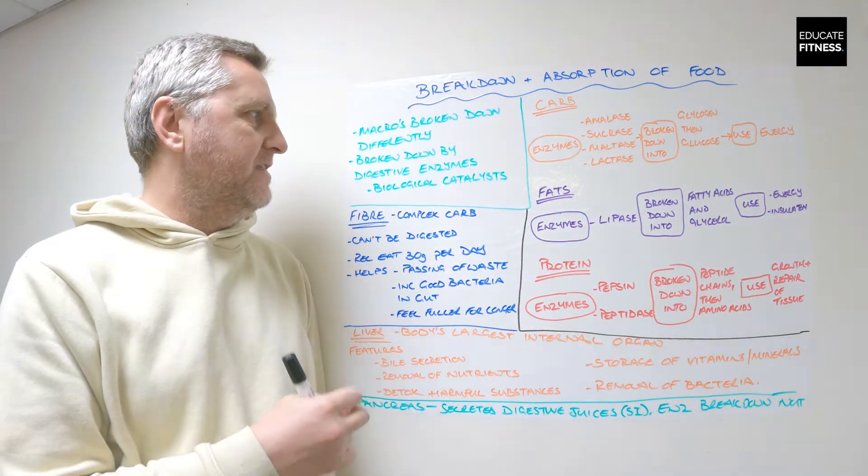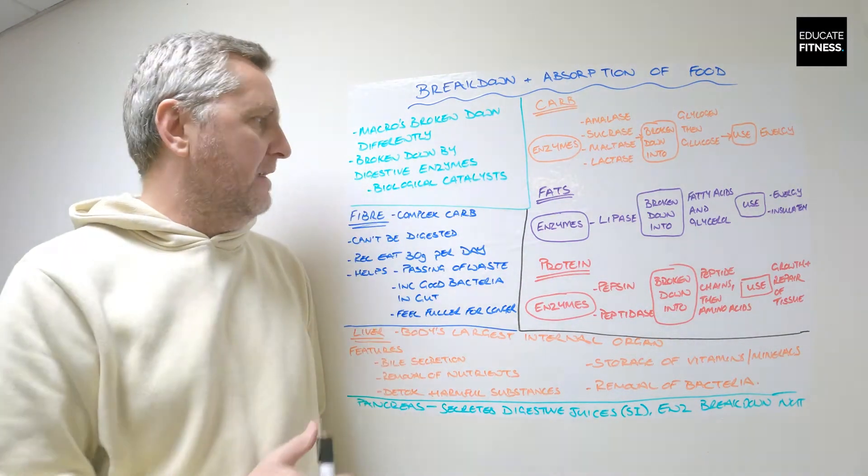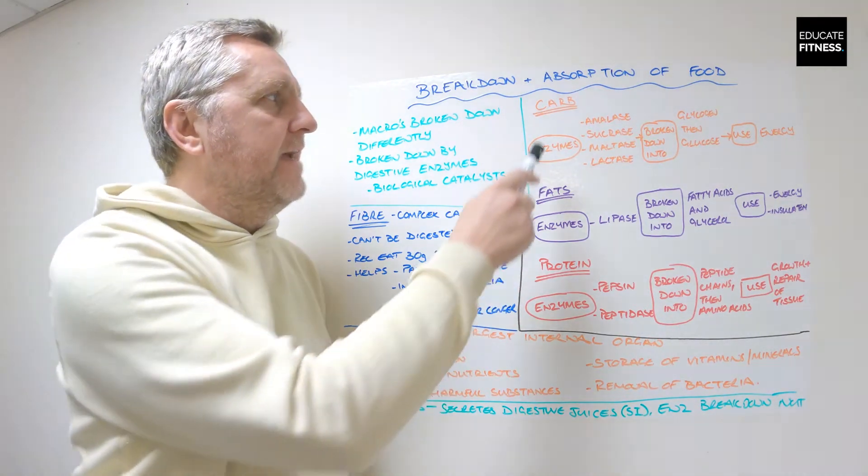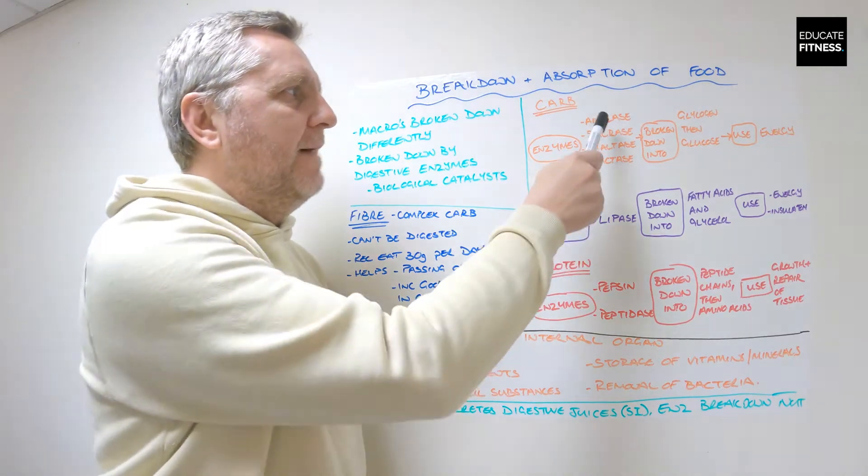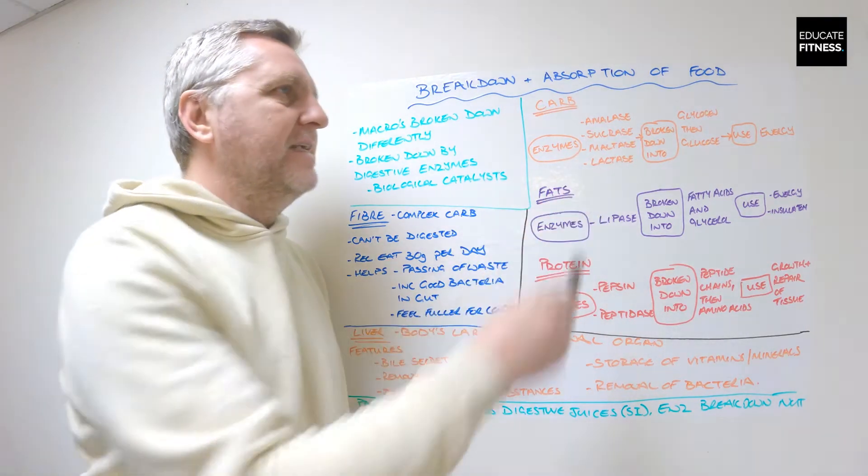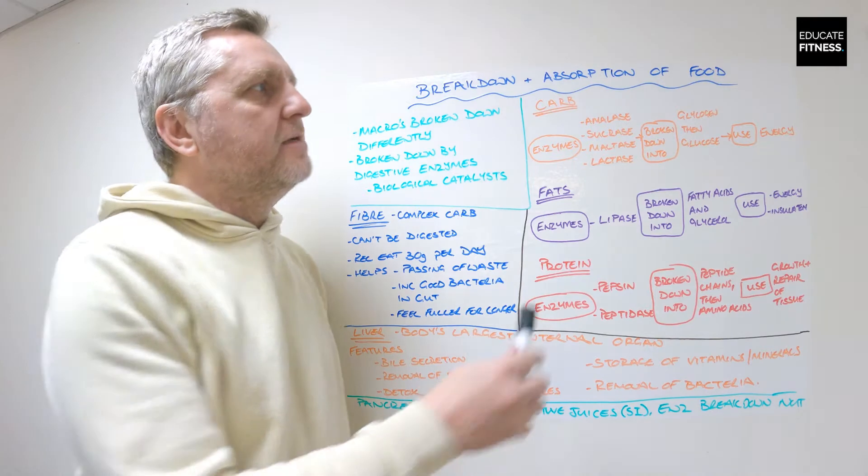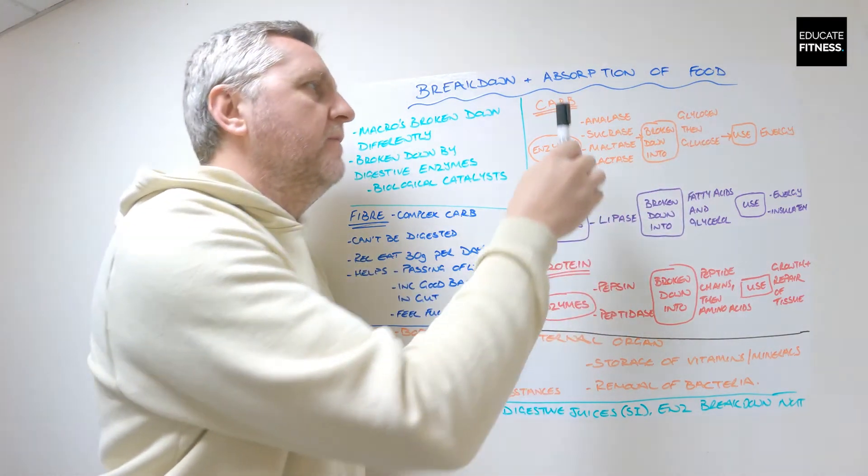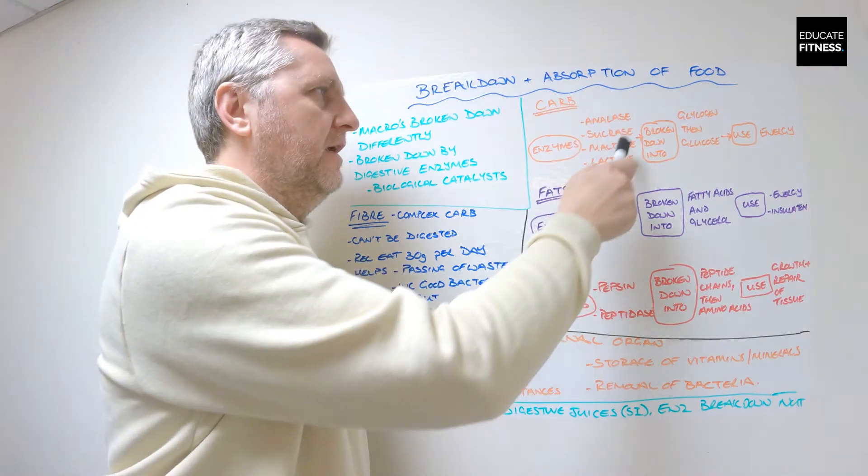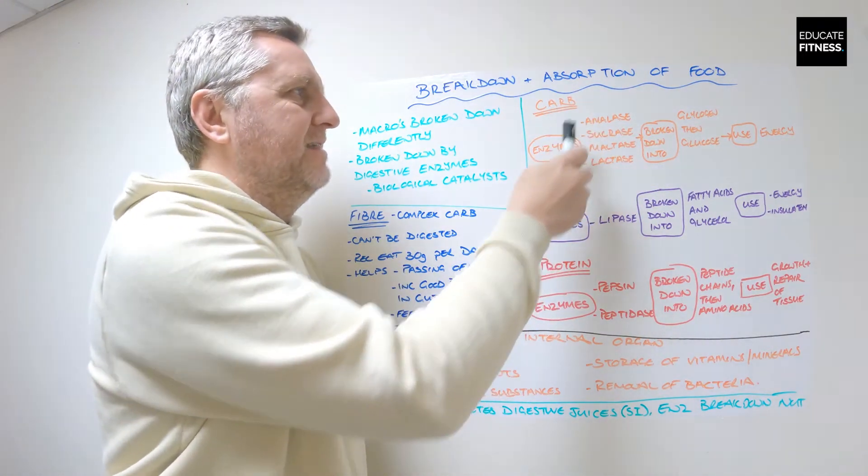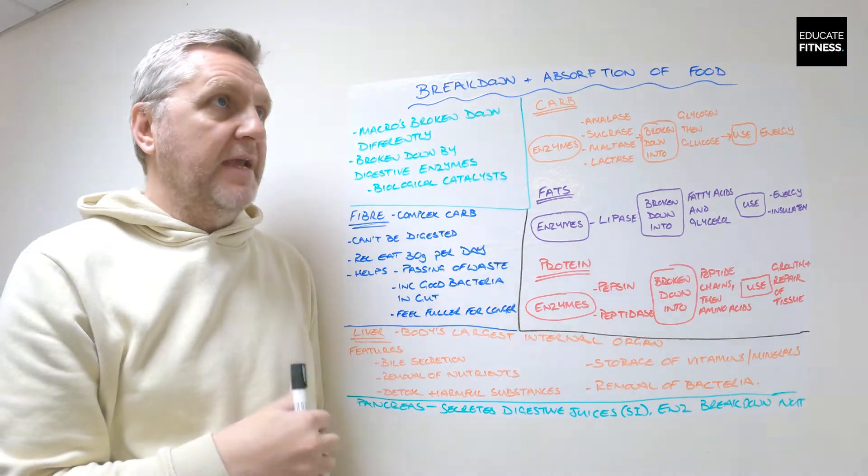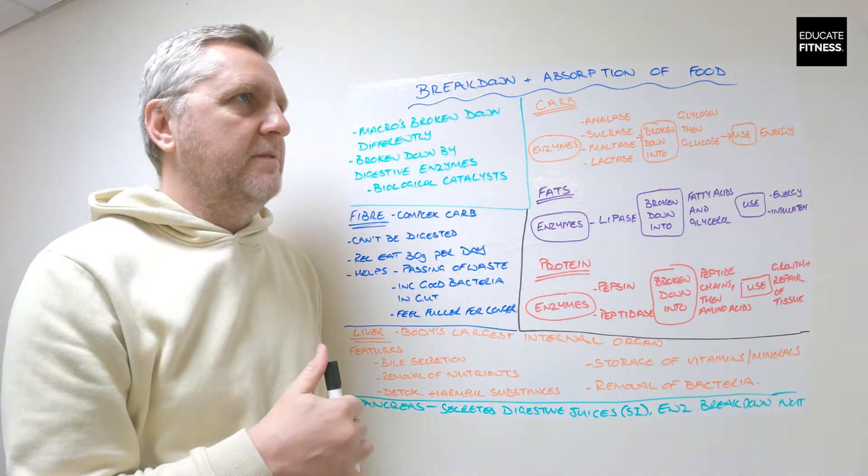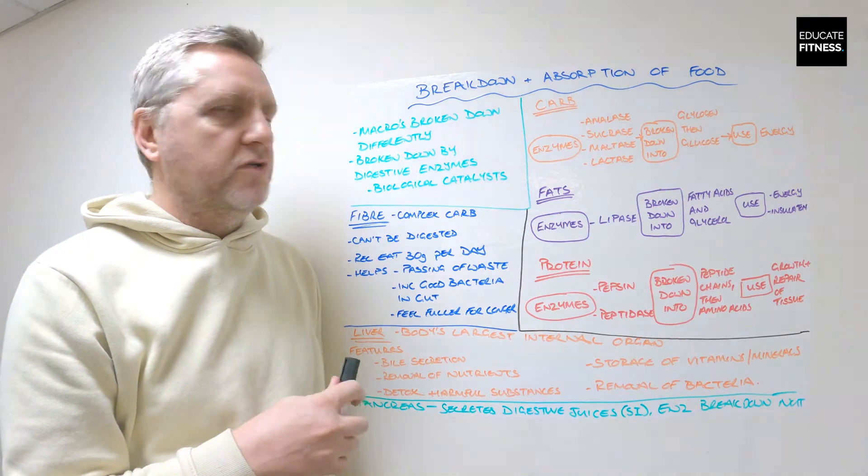When it comes to carbs, as you can see here, the four enzymes we've got are amylase, sucrase, maltase and lactase. These are broken down into glycogen and then glucose. Don't worry too much about each one of these—basically these all catalyze different things into sugars, into glucose. They're part of the breakdown of sugar, maltose and also lactose.